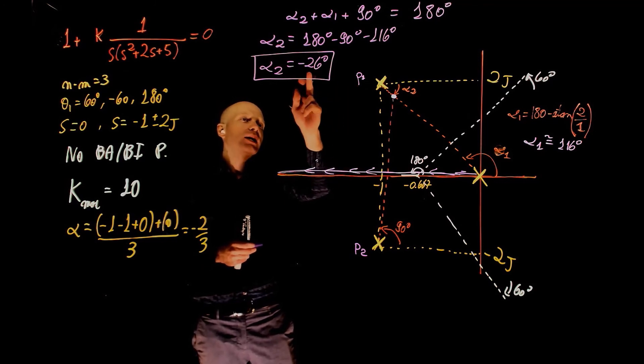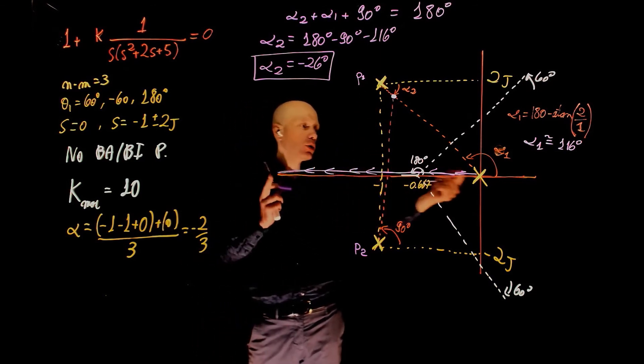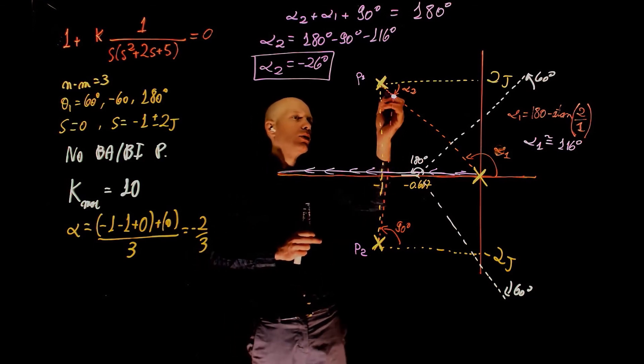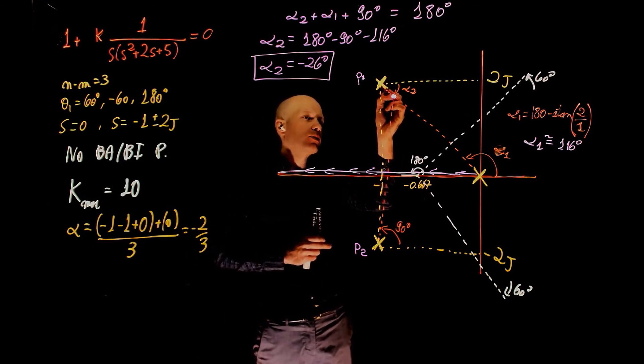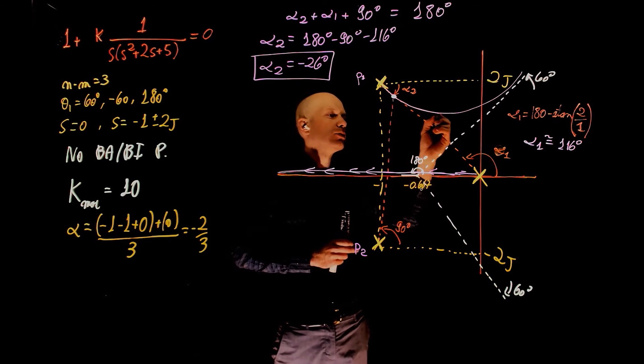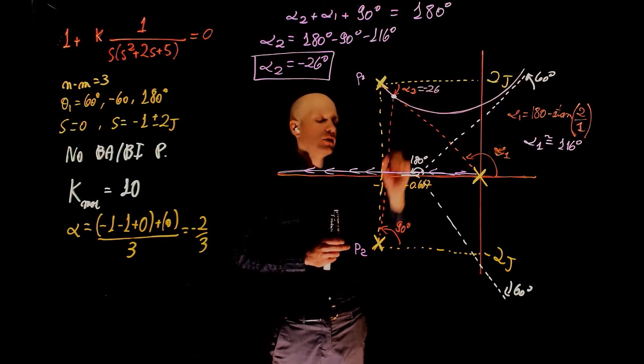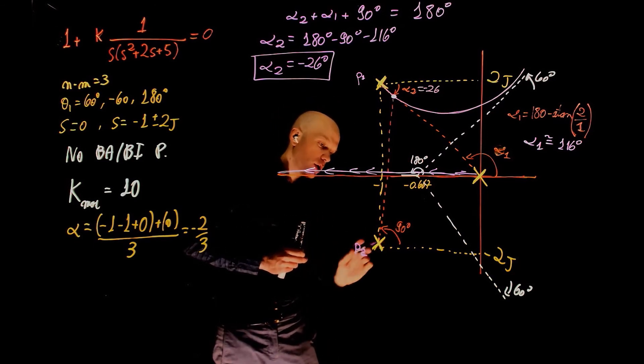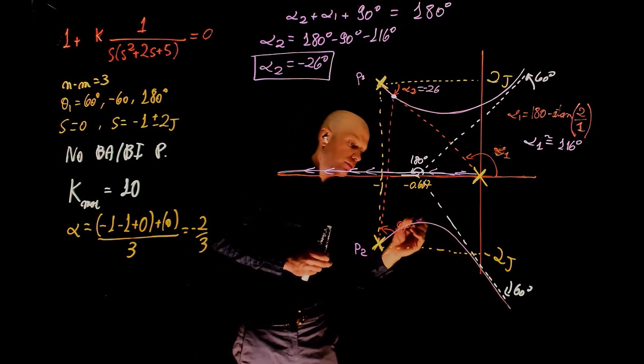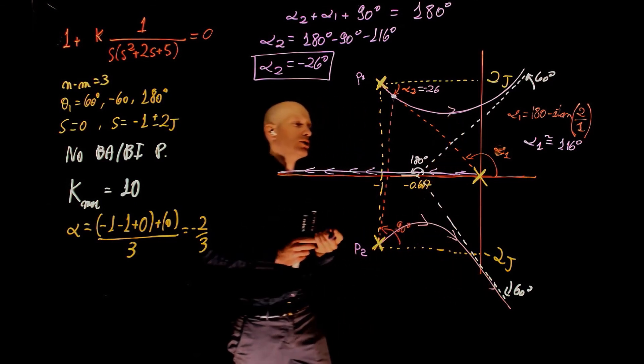If p1 departs at negative 26 degrees, then p2 goes up at 26 degrees. Because remember, the root locus needs to be symmetric with respect to the real axis. Now this pole goes down at 26 degrees, and then it goes along the asymptote. And this angle here is negative 26 degrees. The other pole here goes up at 26 degrees and then joins the asymptote. So it goes up and then down. And here we have this beautiful root locus.